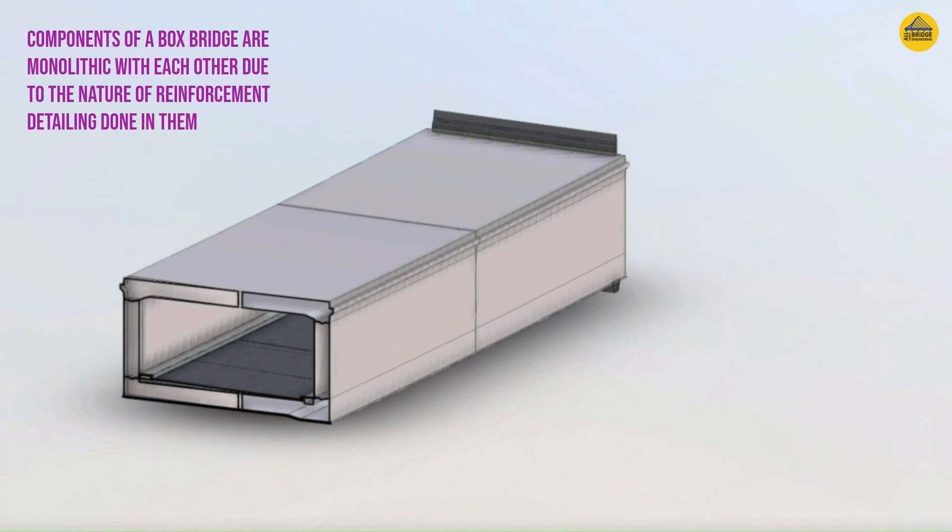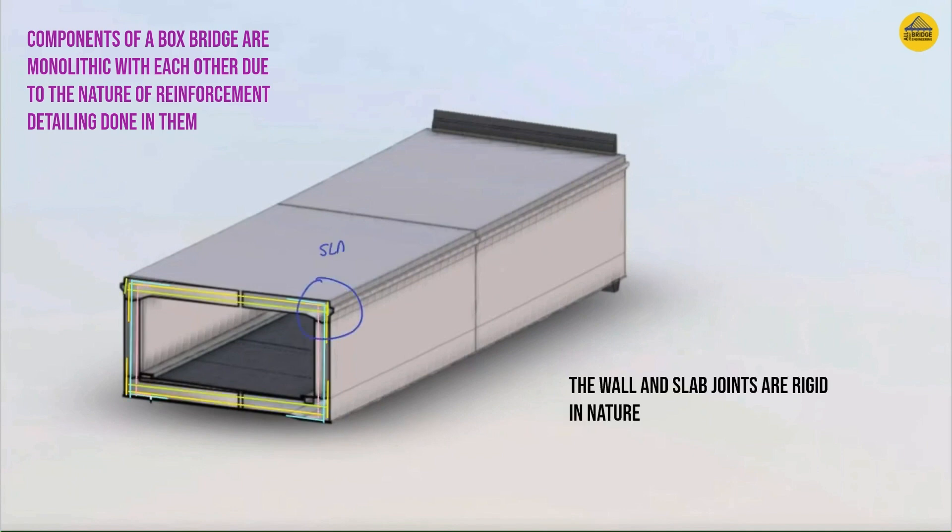Now this structure behaves as a rigid frame which is monolithic at all joints, because the reinforcement detailing is done in such a way that the slab reinforcement goes to the box wall and the box wall reinforcement goes to the slab. In that fashion, monolithic behavior is ensured.